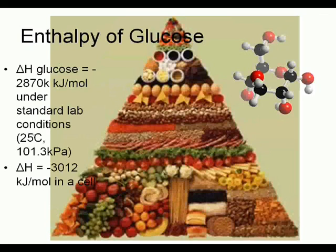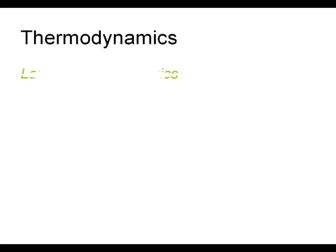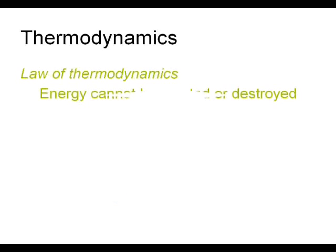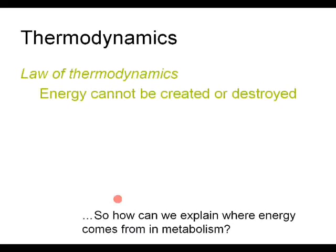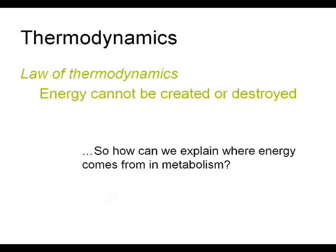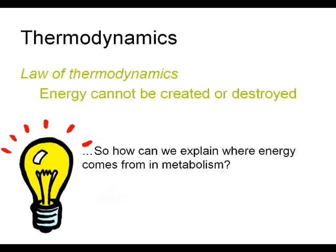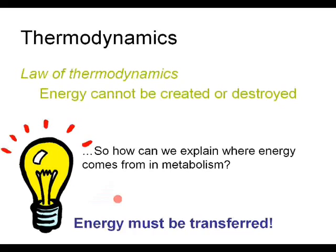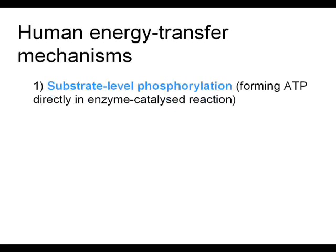The enthalpy change values are negative because energy is released. Next, we are going to look at thermodynamics. The law of thermodynamics states that energy cannot be created or destroyed. So how can we explain where the energy comes from at the end of metabolism? Energy must be transferred. The human body has certain energy transfer mechanisms — the first of which is substrate-level phosphorylation, where ATP is directly formed.